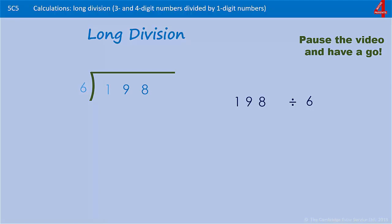How many times does six go into one? It doesn't, so we put a zero there. Now we join the one with the next digit to make 19. How many times does six go into 19? It'll go in three times. What's three times six? Three times six is 18, so we're going to take that 18 away from the 19, to leave one.